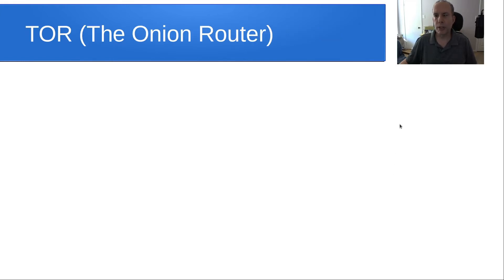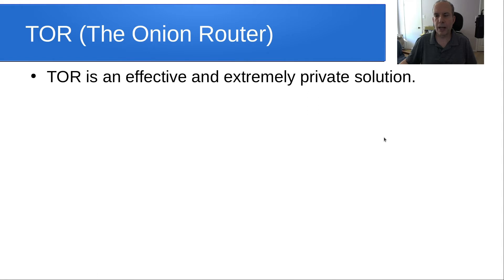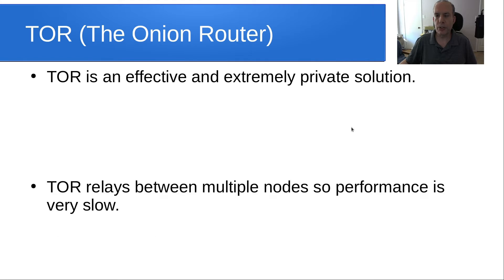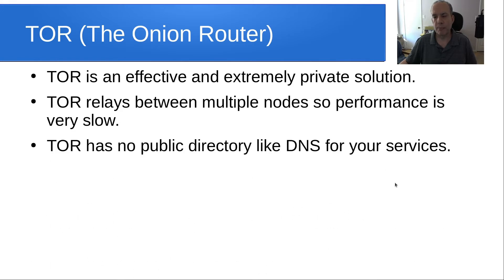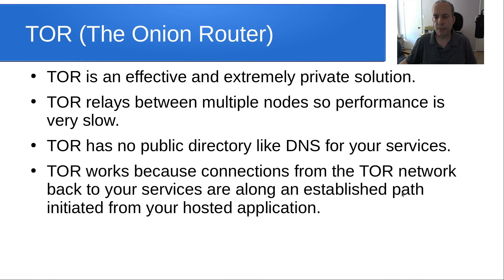What about the Tor solution? Tor is the Onion Router, and I have some videos on that. Tor is an effective and extremely private solution. Tor relays between multiple nodes, so performance is very slow unfortunately. And Tor has no public directory like domain name services for your services. Tor works because connections from the Tor network back to your services are along an established path that got initiated from your hosted application server configured to run Tor.